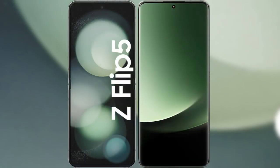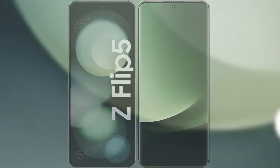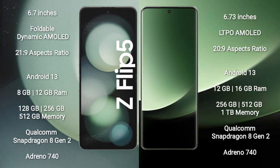I will compare the new Samsung Galaxy Z Flip 5 with Xiaomi 13 Ultra. Samsung Galaxy Z Flip 5 comes with a 6.7-inch foldable Dynamic AMOLED display with an aspect ratio of 21:9. Xiaomi 13 Ultra comes with a 6.73-inch LTPO AMOLED display and an aspect ratio of 22:9.